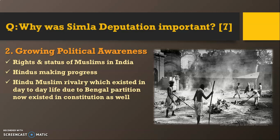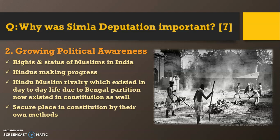Hindu-Muslim rivalry existed in day-to-day life — the perfect example being the Bengal Partition of 1905. When the Shimla Deputation was accepted and Muslims were granted concessions like separate electorates and more seats in the council, Hindus were not happy. This meant the rivalry between Hindus and Muslims now existed in the constitution as well. It also showed that the Muslim community had decided to establish a secure place in the constitution by their own methods, reflecting a growing political awareness among Muslims.